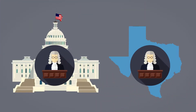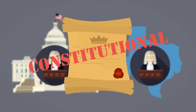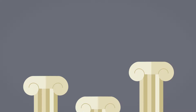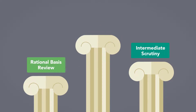Regardless of the mechanism by which a law is challenged, it frequently falls to federal and state judges to assess the constitutionality of laws, or the ways in which those laws are applied. To aid in these often complex analyses, the Supreme Court has adopted a tiered approach, with laws that are inherently more suspicious being viewed with more scrutiny than others.